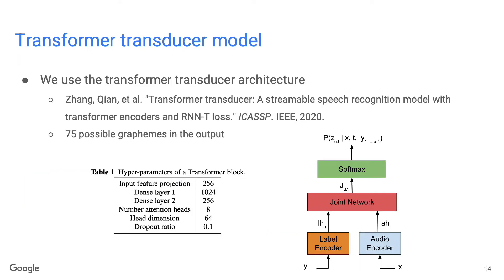To train the speaker turn detection model, we use the recently proposed transformer transducer architecture. The model has three parts: the audio encoder, the label encoder, and a joint network. The audio encoder has 15 transformer layers, with details listed in Table 1. The label encoder is a bigram embedding lookup, the joint network has three dense layers, and there is a final softmax projection to 75 possible graphemes in the output.